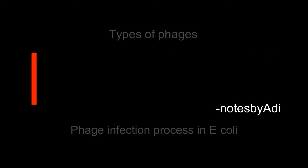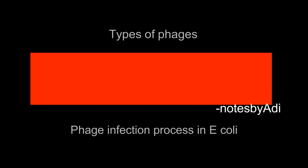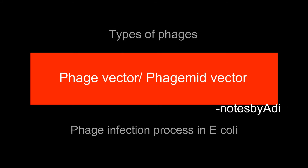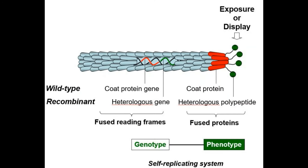This video will cover what phage biology consists of. The main features we will discuss are the structure, genome, infection, replication, assembly, and how the phage exits from infected cells. There will also be discussion on how phages display themselves and library types — you can check the related videos for that.